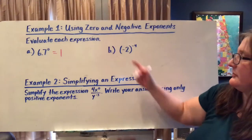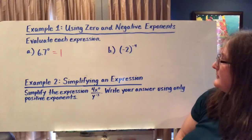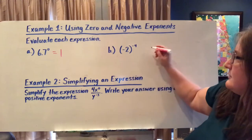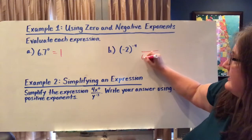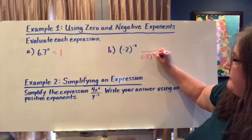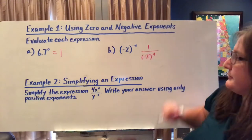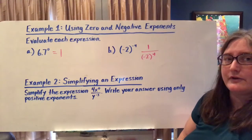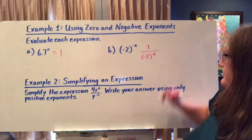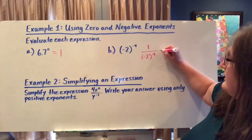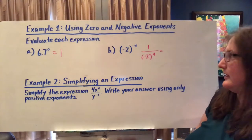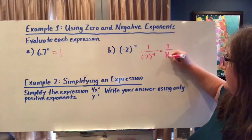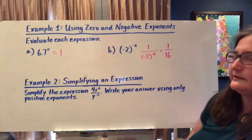Let's take a look at this one. I have a negative integer for my exponent — negative four. So this is equal to negative two to the positive fourth power, but the reciprocal of that number — one over negative two to the fourth power. Negative two times negative two times negative two times negative two gives us positive sixteen, so it's equal to one sixteenth.